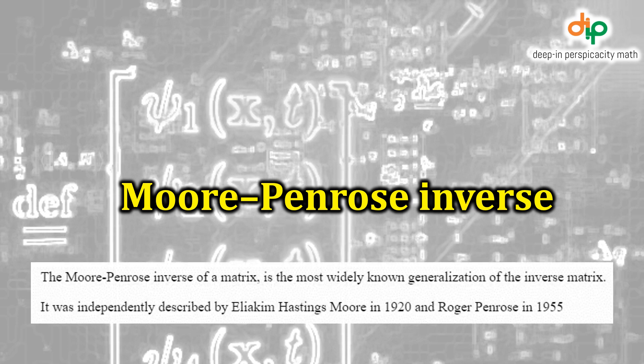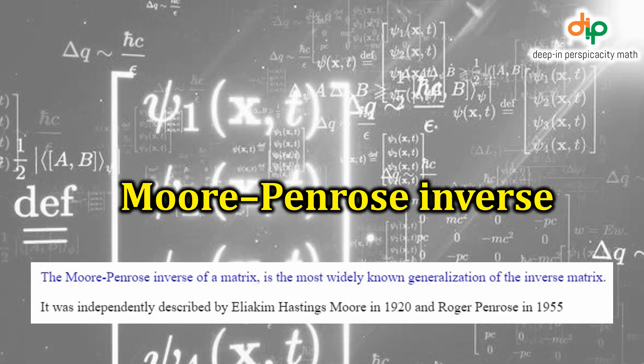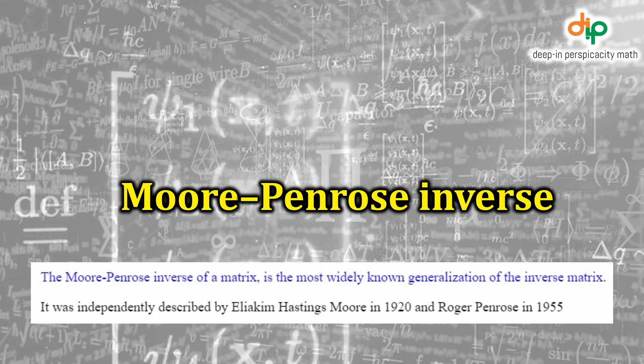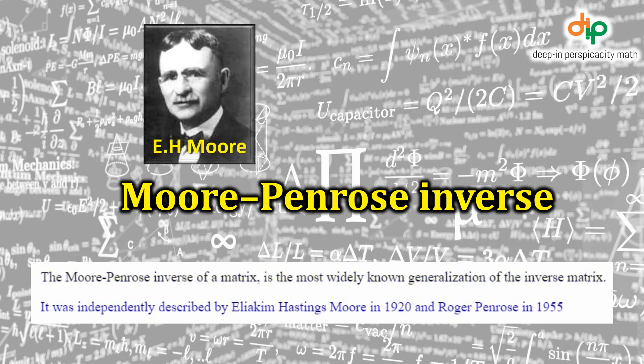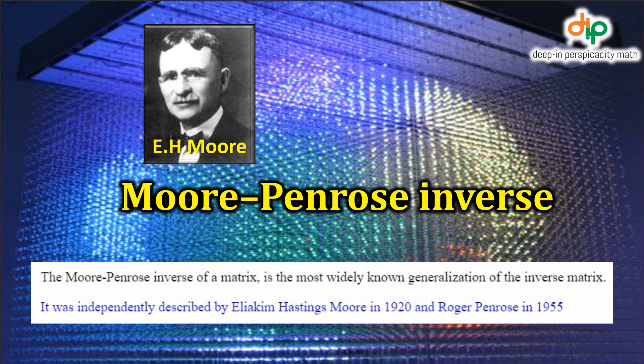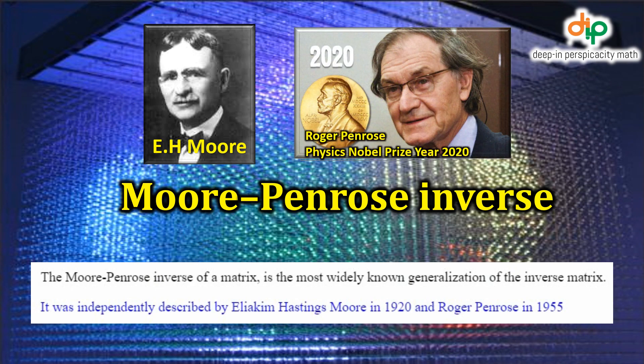The Moore-Penrose Inverse. The Moore-Penrose inverse of a matrix is the most widely known generalization of the inverse matrix. It was independently described by Eliakim Hastings Moore in 1920 and Roger Penrose in 1955.